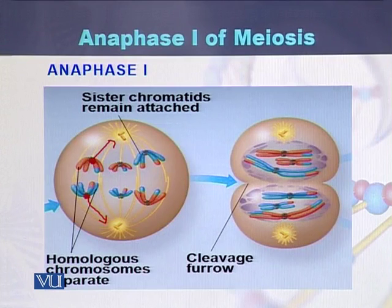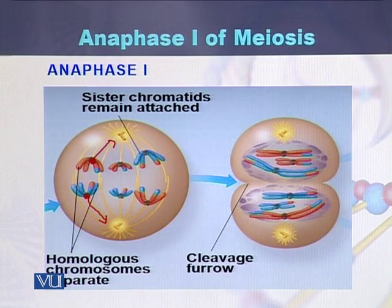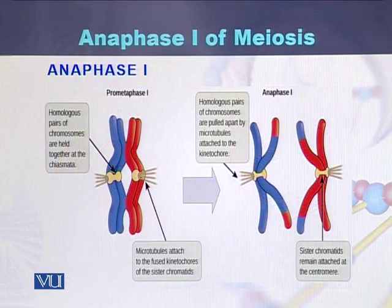This is the difference between anaphase of meiosis 1 and anaphase of mitosis. In mitosis, sister chromatids split and separate from each other — one chromatid moves to one pole while the other moves to the opposite pole. But in anaphase of meiosis, the centromere does not split; instead, a chromosome containing two sister chromatids moves together towards each of the poles.